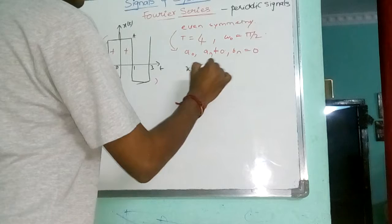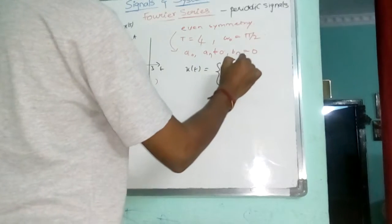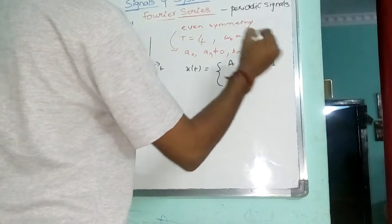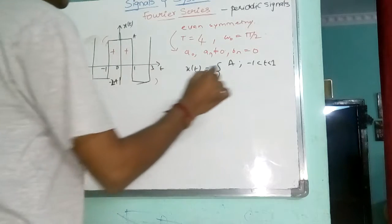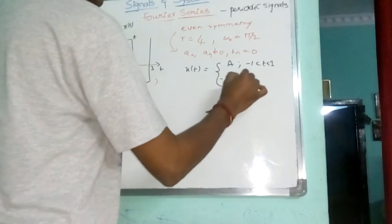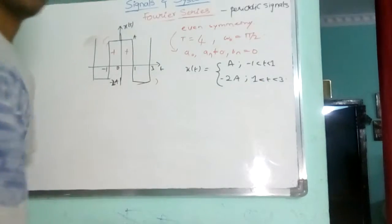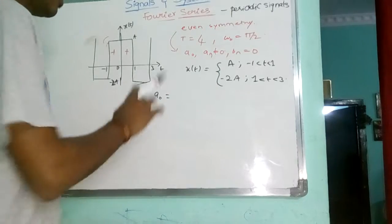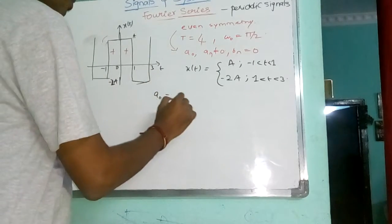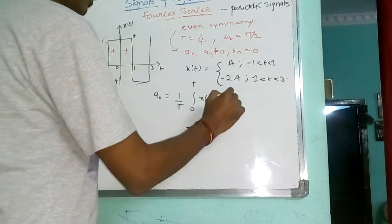X of T: from where to where? It is A from minus 1 to 1. And from 1 to 3, it is minus 2A. Now, first getting the DC value. This DC value is 1 by T, integral 0 to T, X of T, DT.